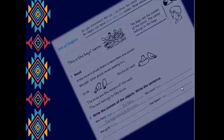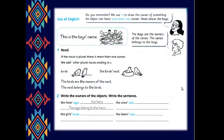Now, I want you to open your workbook on day 67. Here, do you remember? We use apostrophe S to show the owner of something. An object can have more than one owner. Read about the boys. Look at the example here.